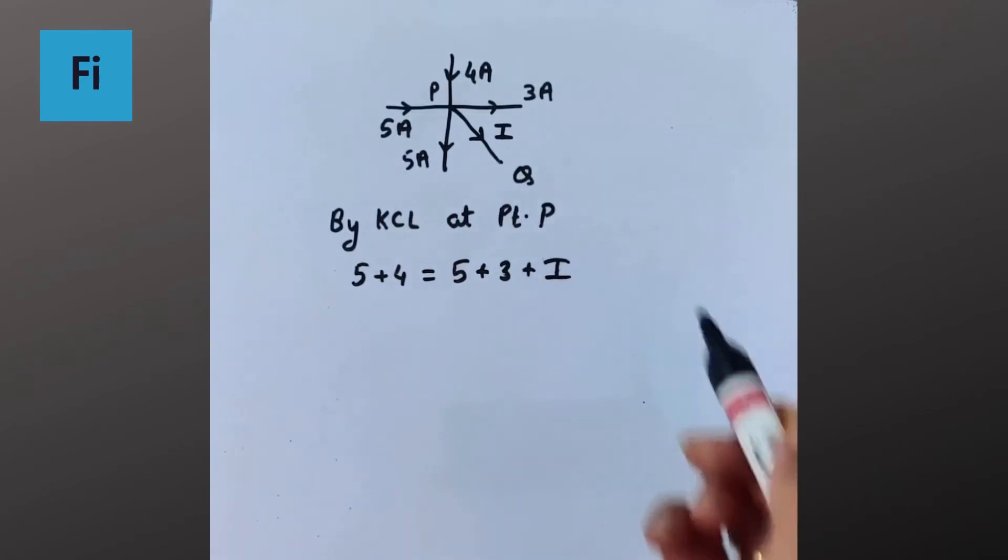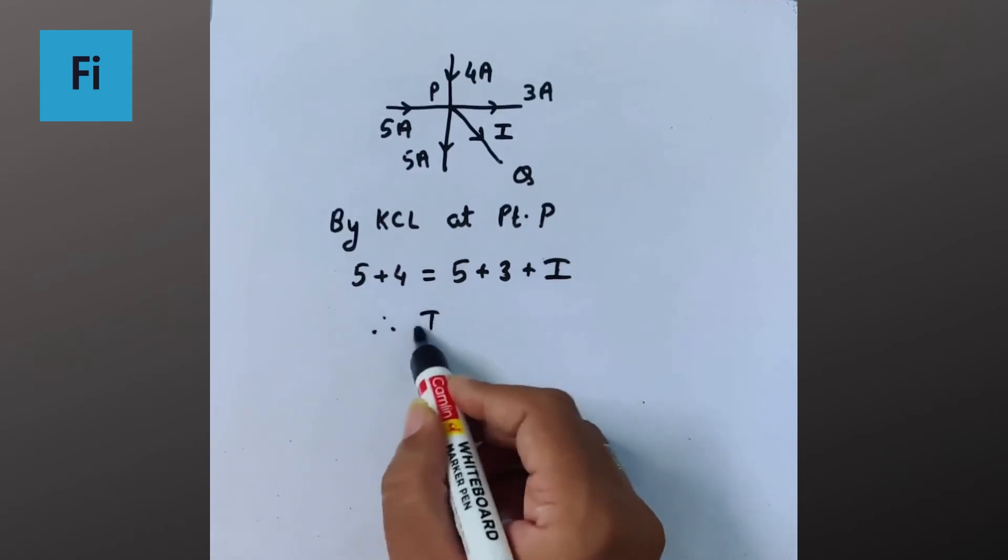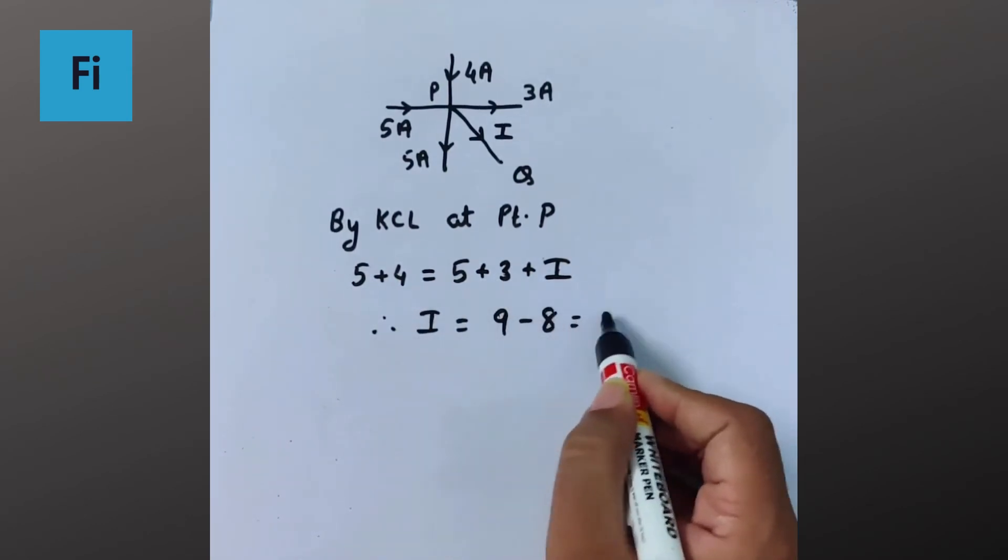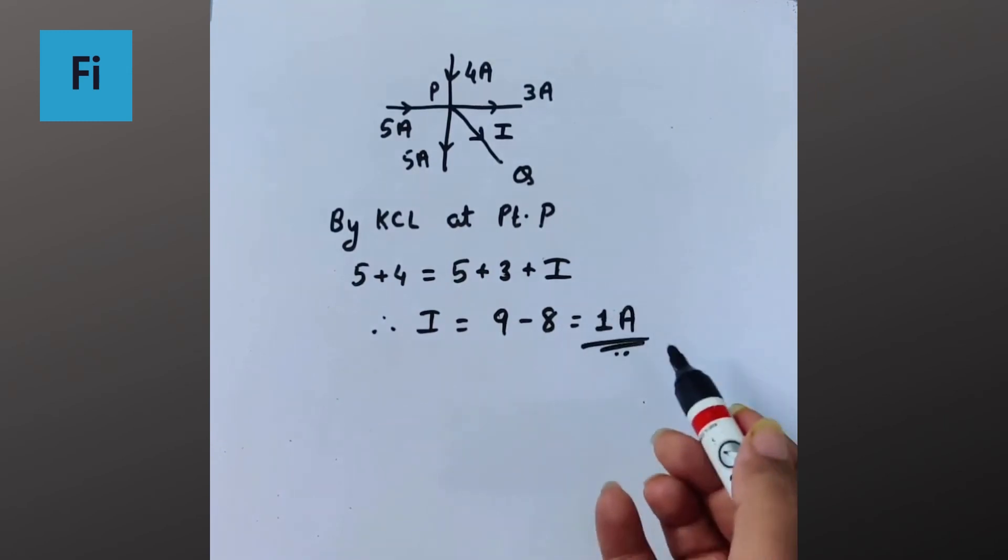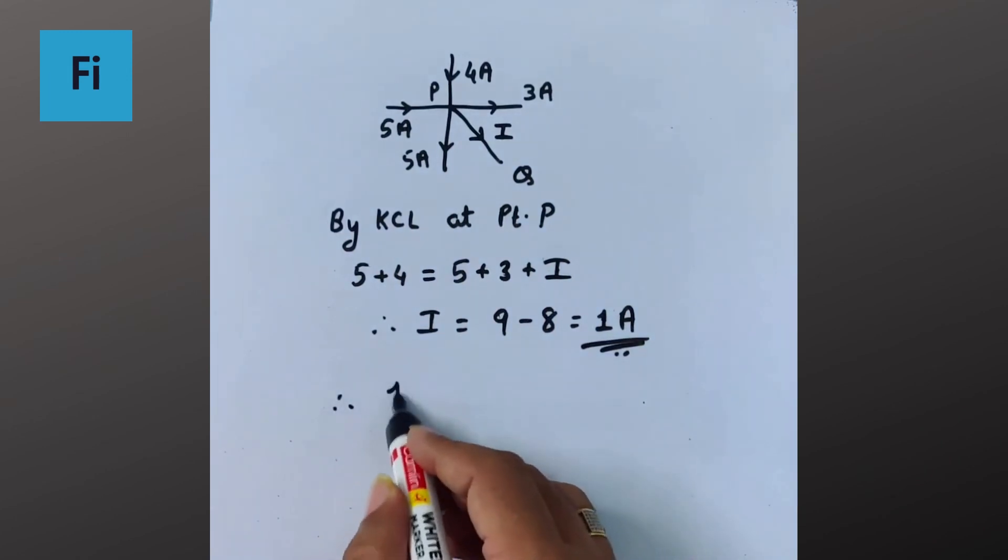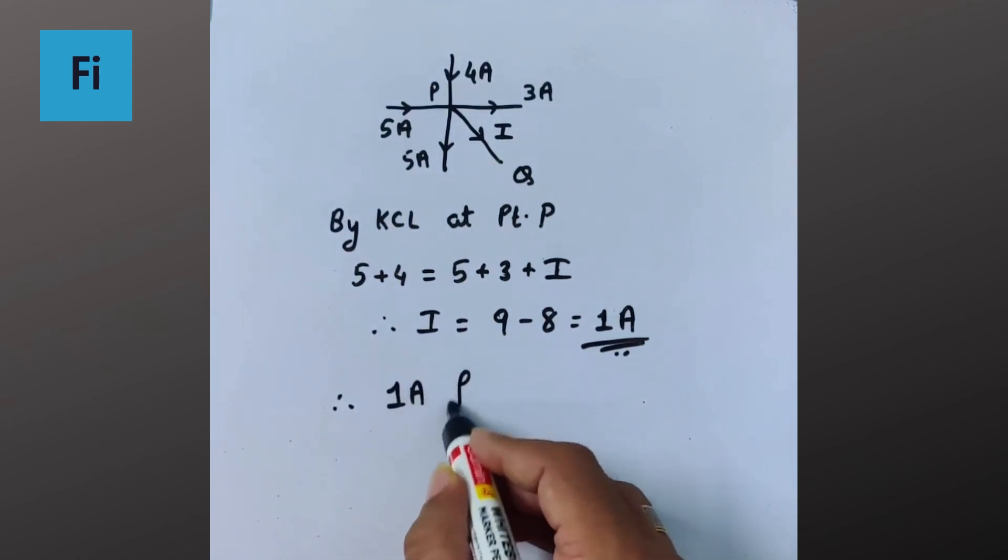So I is going to be 5 plus 4, 9 minus 8, which is 1 ampere. Since it is coming positive, the direction I assumed was correct. That means it is 1 ampere from P to Q.